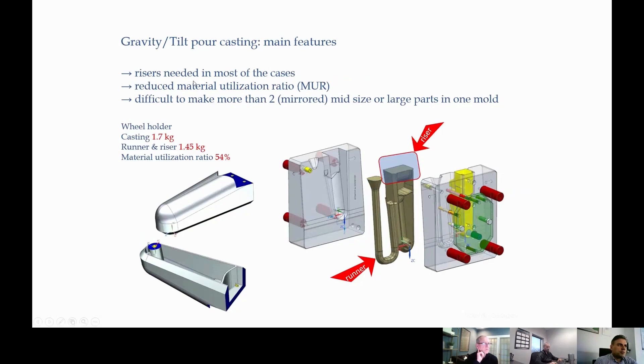Another feature is in gravity, it is difficult to make more than two parts, mirrored parts in the same mold, because there are some limitations in the process. Most cases need a riser to avoid porosity, and after all we have heavy runner, heavy risers, and material utilization ratio is not so big.